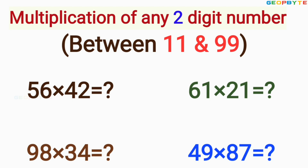Hi friends, welcome to Geobyte. In this video, I will explain a very easy and simple trick: how to get the answer just in two seconds for the multiplication of any two-digit number from 11 to 99. This trick is very useful and helpful for students who are willing to write competitive exams, as we all know the time factor is very important for them.